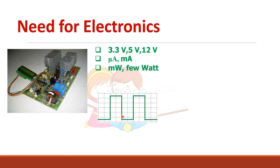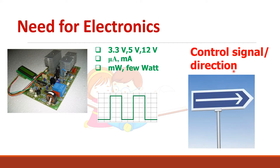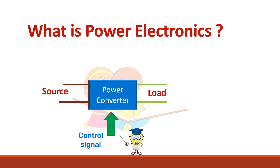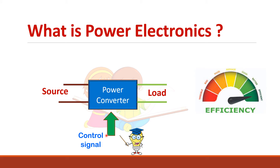The signal from the low power electronic circuit is used as a control signal for the high power power electronic devices. So power electronics helps to transfer power from the source to the load based on the information from the control signal, such that the system always operates at higher efficiency.